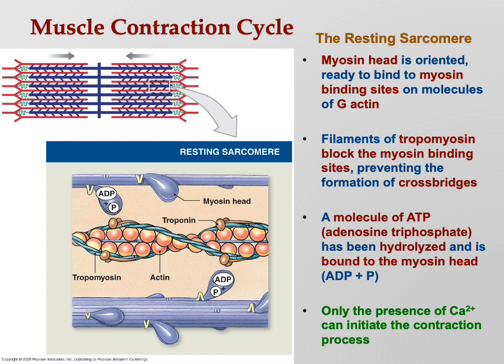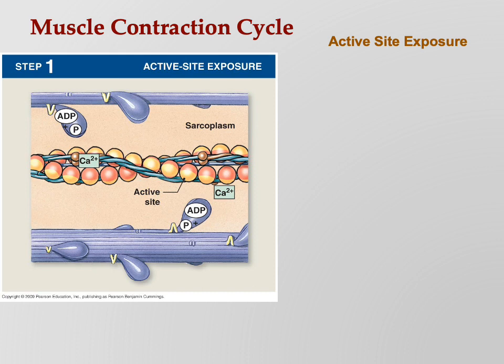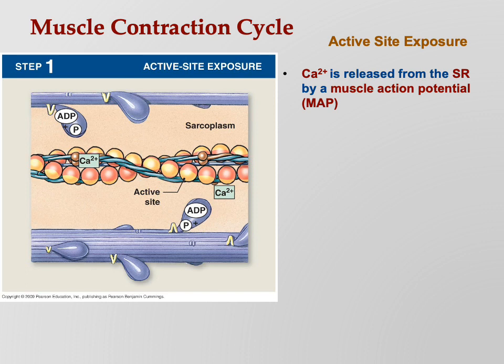Only the presence of calcium can make contraction start to happen. Remember, the troponin-tropomyosin complex is in the way, and the only thing that can push it out of the way is calcium. So the next step is active site exposure: calcium is released from the sarcoplasmic reticulum by a muscle action potential - the electrical impulse that ran along the sarcolemma, went down the T-tubule, and made its way into the myofibril, running alongside the terminal cisterns.